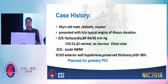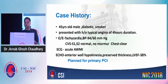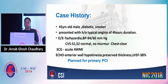A 45-year-old male patient, non-diabetic and smoker, presented with history of typical angina of four hours duration. On examination, patient had tachycardia and hypotension with blood pressure of 94/60 mmHg. Cardiovascular system examination was normal without any murmur, and lungs were clear.